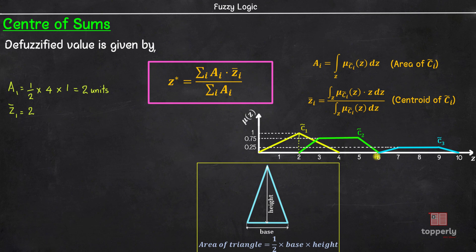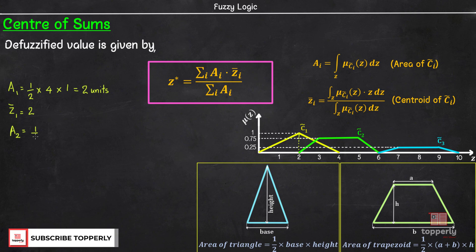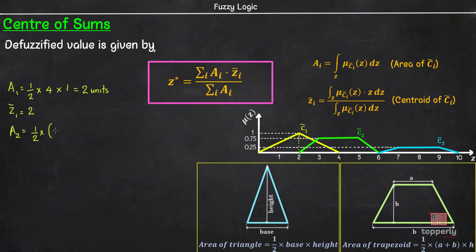Next, we have the trapezoid C2. We know that the formula for calculating the area of a trapezoid is half into (A plus B) into H. So area of C2, A2, is equal to half into A, which is 5 minus 3 or 2 units, plus B, which is the base, which is 6 minus 2 or 4 units, into height, which is 0.75. This is equal to 2.25 units. Also, due to the symmetry of trapezoid C2, the centroid is 4. Therefore, Z-bar_2 is equal to 4.